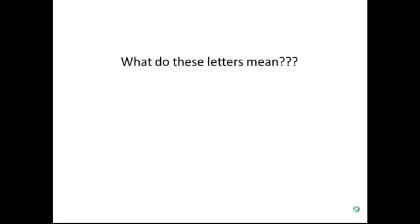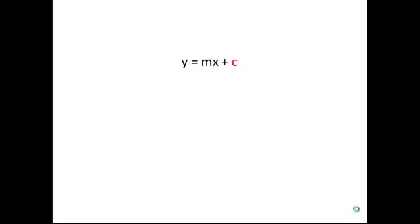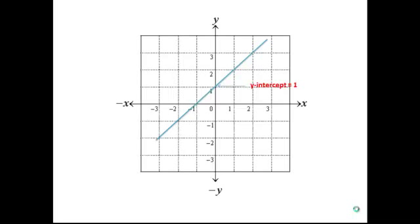What do these letters mean? The y and the x refer to the two axes on a Cartesian plane, where the x is the horizontal axis and the y is the vertical axis. The c refers to the y-intercept. This is where a line crosses the y-axis.